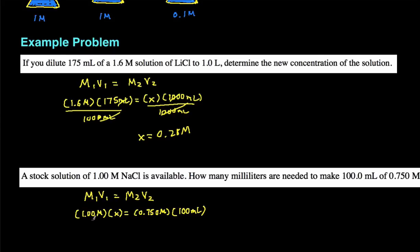Then we just solve for our unknown. So divide both sides, isolate the X, divide both sides by 1.00 molar. Then your molarity is going to cancel out, leaving you with just milliliters. And then X is going to be 75 milliliters.